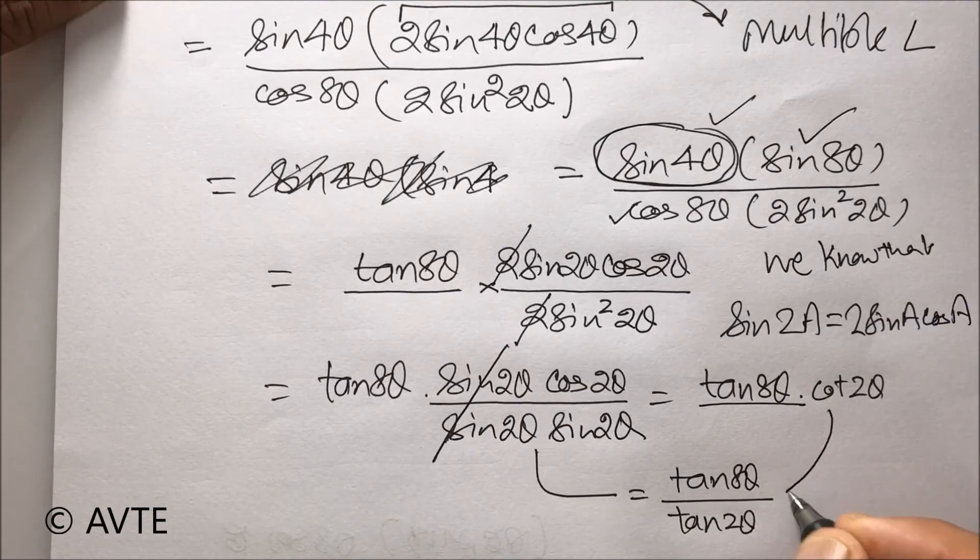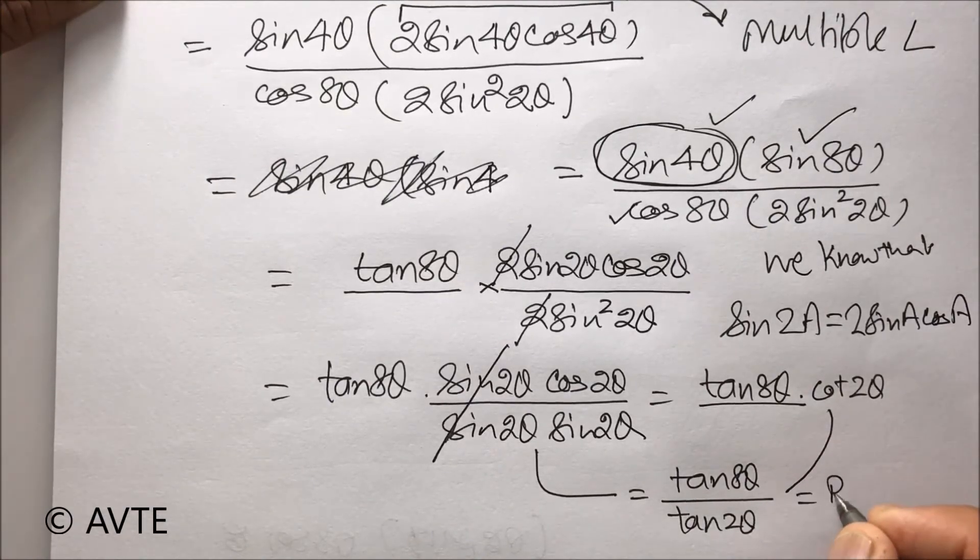Or, after writing cot, you can convert that to 1 by tan 2 theta. And, this is the right-hand side.